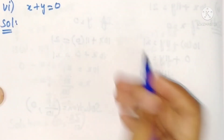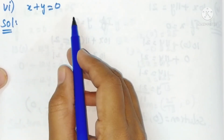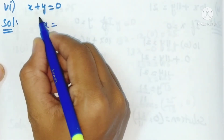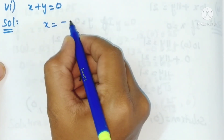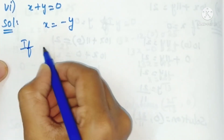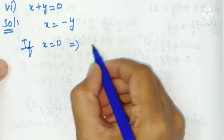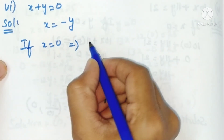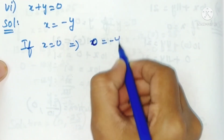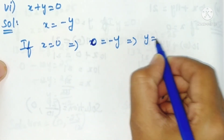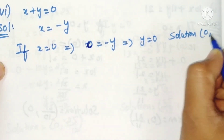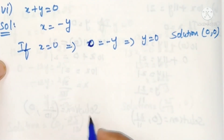Last problem: x plus y = 0. Transposing, x equals minus y. If x = 0, then 0 equals minus y, so y also equals 0. Solution is (0, 0).